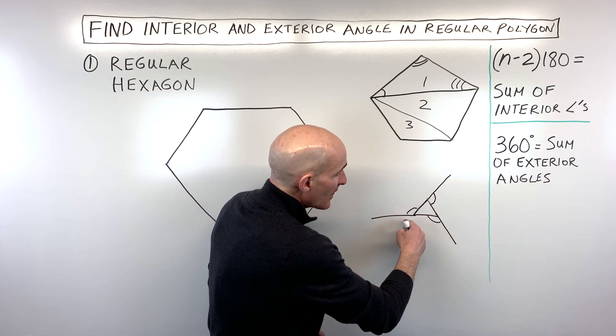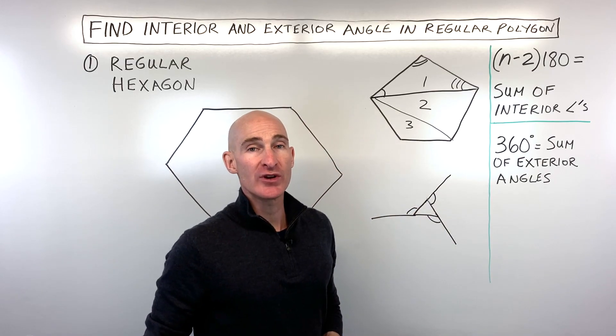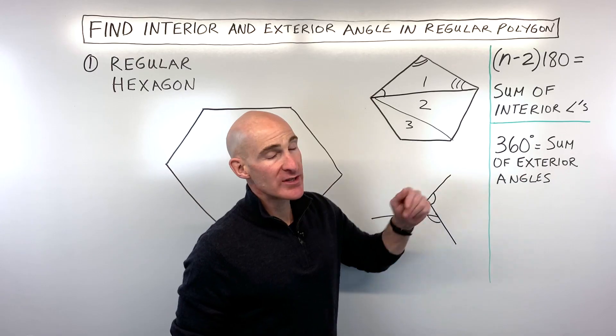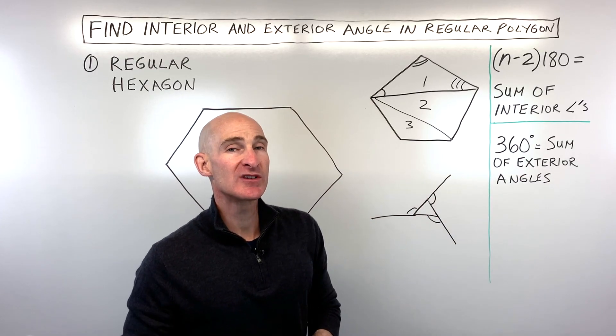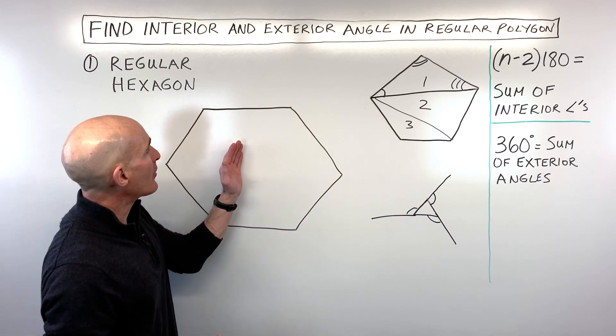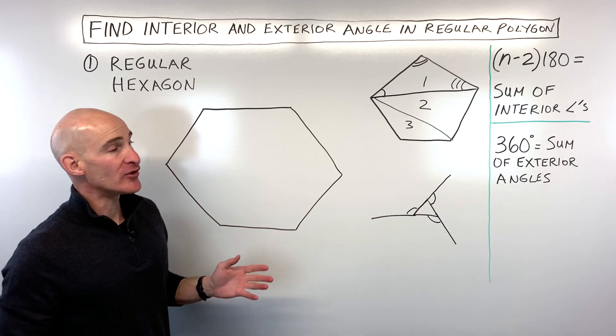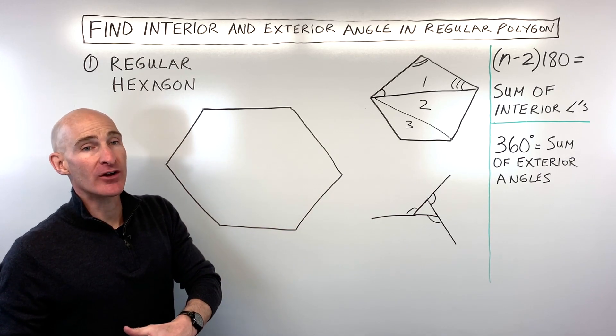And what it does is it forms like a circle, 360 degrees. So no matter how many sides, how many angles, the exterior angles will always add up to 360. So let's go through some examples now and talk about how can you exactly find the measure of just one of the interior angles in a regular polygon and one of the exterior angles.